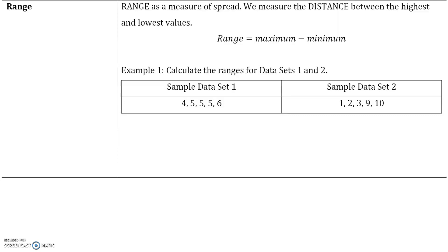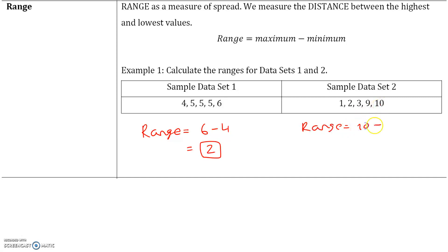Range is a measure of spread. We measure the distance between the highest and lowest values, so the range is simply the maximum minus the minimum. In the first case, the range is 6 minus 4, which is 2. In the second case, the range is 10 minus 1, which is 9. The first data set has a smaller range because it has a smaller spread; the second has a larger range because it has a larger spread.